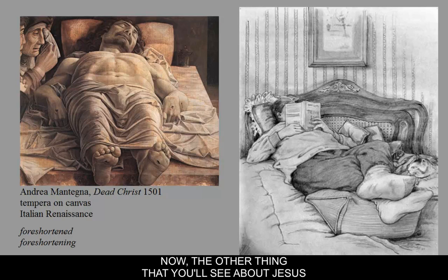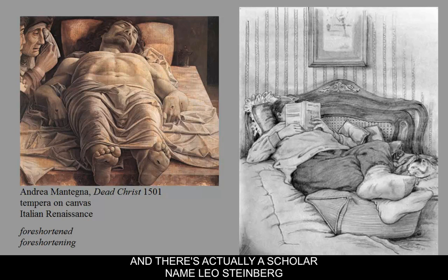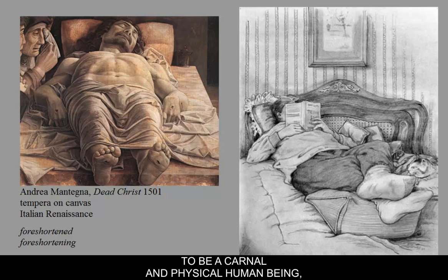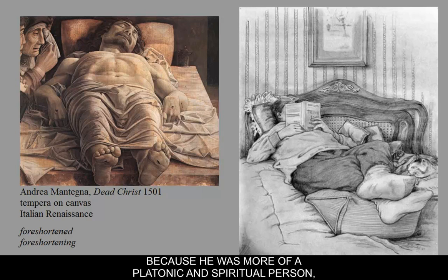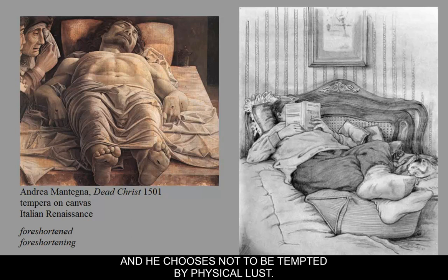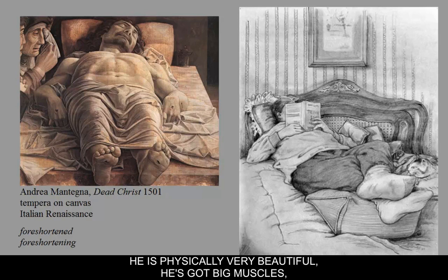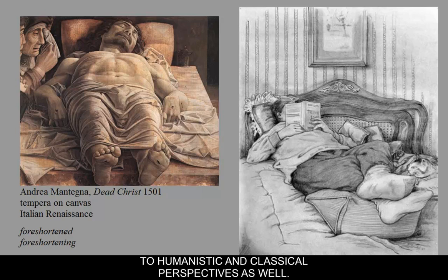The other thing you'll notice about Jesus is that the drapery kind of outlines his genitals, which are a little exaggerated. There's actually a scholar named Leo Steinberg who discusses this in a book — I believe it's called The Sexuality of Christ — in which they wanted to show that Jesus was fully equipped to be a carnal and physical human being. It wasn't that he didn't have genitals; he just didn't want to use them because he was more of a Platonic and spiritual person, and he chooses not to be tempted by physical lust. Jesus also possesses that classical kalos — he is physically very beautiful with big muscles, his anatomy showing that of almost a Greek god — a reference to humanistic and classical perspectives.